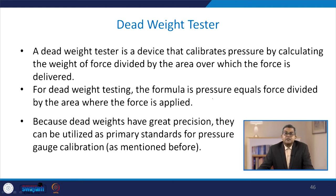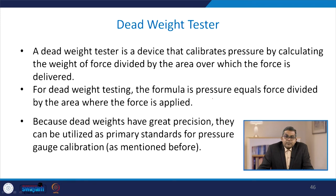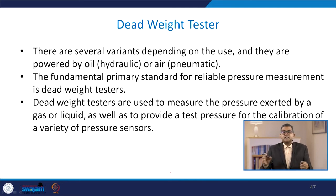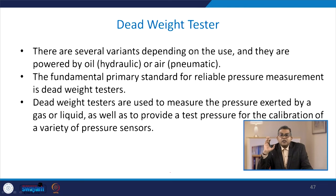A dead weight tester calibrates pressure by calculating the weight of force divided by the area over which the force is delivered: P = F/A. Because dead weights have great precision, they can be utilized as primary standards for pressure gauge calibration. There are several variants powered by oil (hydraulic) or air (pneumatic). Dead weight testers are used to measure the pressure exerted by gas or liquid and to provide a test procedure for calibrating a variety of pressure sensors.